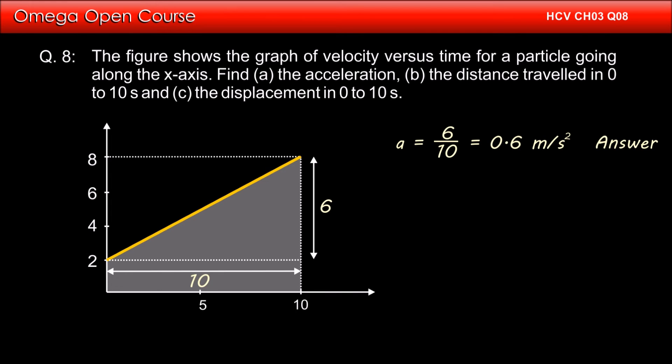The area of a trapezium is given by half into sum of parallel sides into the distance between the parallel sides. Therefore, displacement in this case is half into 2 plus 8 into 10, that is 50 meters.